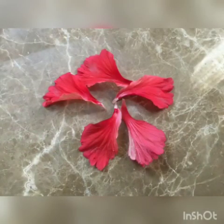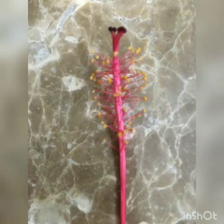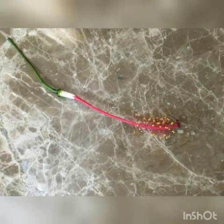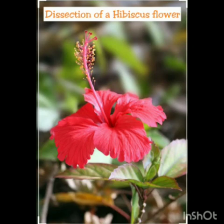During the dissection of the hibiscus flower today we could see the different parts of a flower: the petals, the sepals, the male reproductive part which had the anther and the filament, and the female reproductive part which had the style. We have understood that the flower is the main part of the plant where we get the fruit and the seeds.